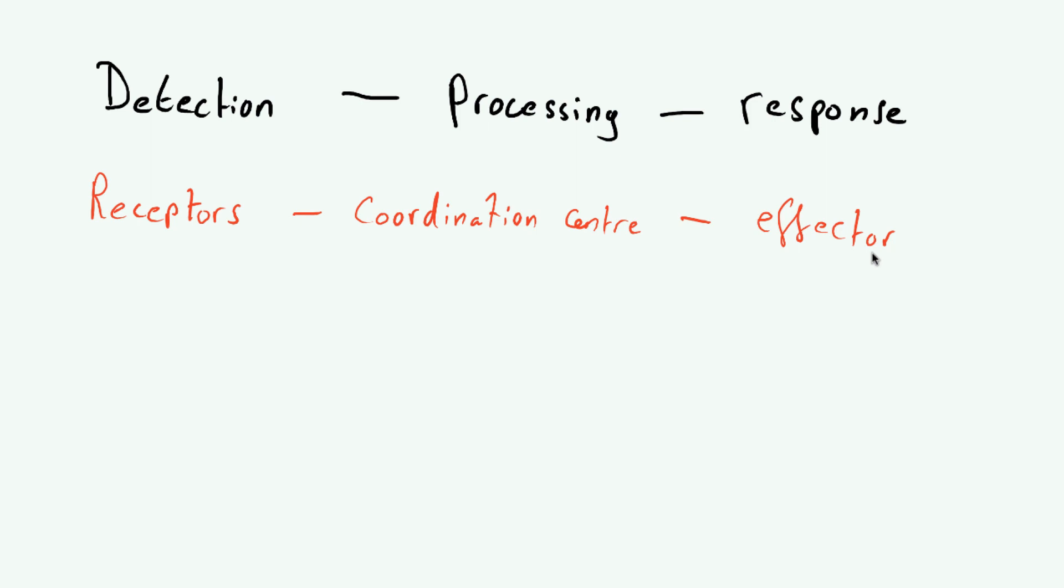Now, we're going to go into more specific examples in later videos. We're going to have a look at specific examples of receptors, the coordination centers and the effectors. And how they all link together. But I just want you to understand that negative feedback mechanisms are the way in which homeostasis is achieved. The ways in which internal conditions are regulated and controlled to be set within a certain limit. For example, our body temperature being within a few degrees of 37. Our blood glucose having specific concentrations, et cetera, et cetera.